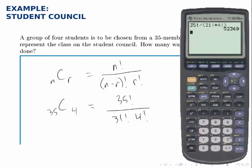The other way, of course, is to use the built-in combinations formula. So we type in n 35, go to the math probability menu,